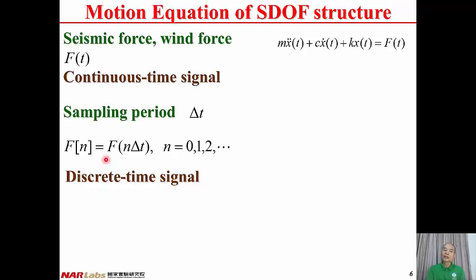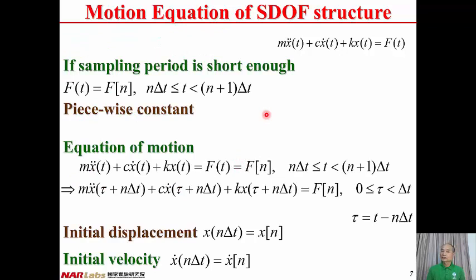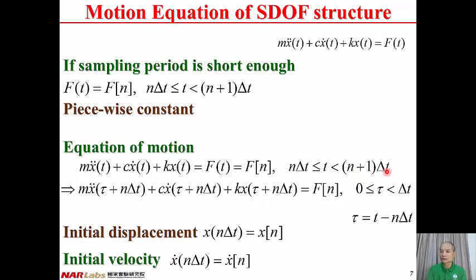After sampling, it becomes a discrete time signal, and F_n equals F of n times delta T. After sampling, we only have information about the seismic force or wind force at 0 delta T, 1 delta T, 2 delta T, etc. If the sampling period is very short, we can assume that during this interval the forcing function is constant.